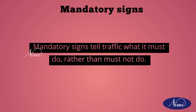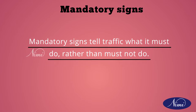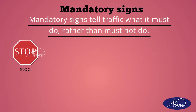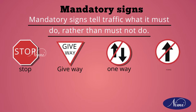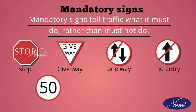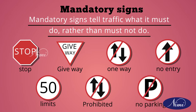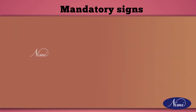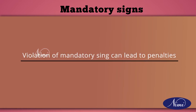First, mandatory signs. Mandatory signs tell traffic what it must do rather than must not do. Examples include stop, give way, one way, no entry, limits, prohibited, and no parking signs. Violation of mandatory signs can lead to penalties.